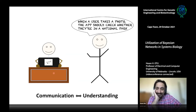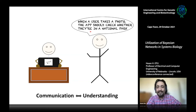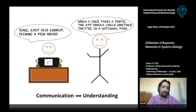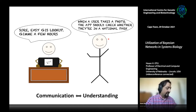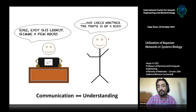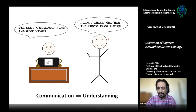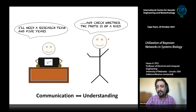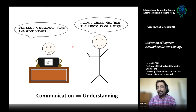A cartoon demonstrates this: a computer person says checking if a photo was taken in a national park is an easy GIS lookup — give me a few hours. But when asked to also check whether the photo is of a bird, they say they'd need to lead a research team for five years, because it requires image processing and artificial intelligence approaches. Some problems are easy to solve, but others are really difficult.